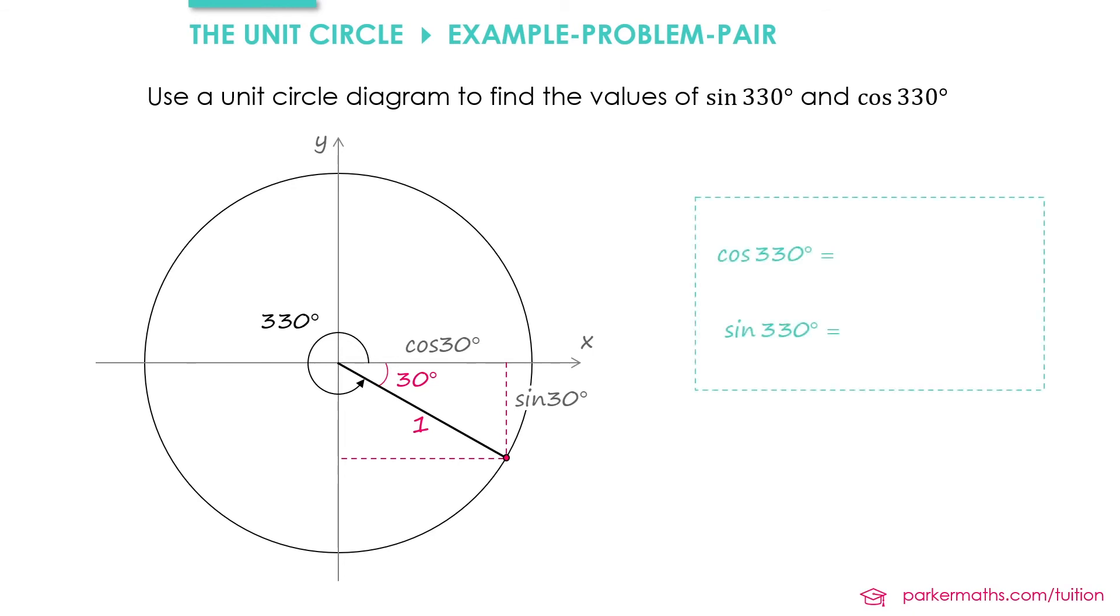So to calculate cos 330 and sin 330, we're going to use the values of cos 30 and sin 30, taking into account whether we're going in the positive or negative directions.